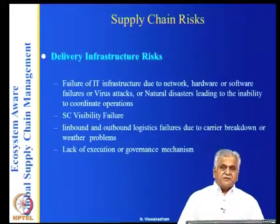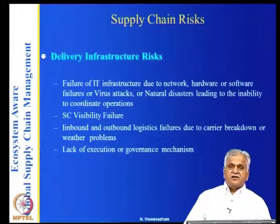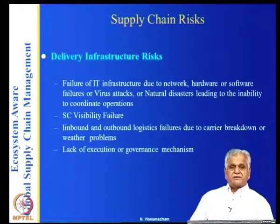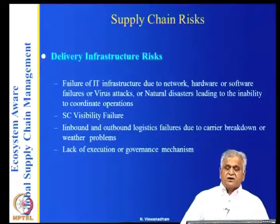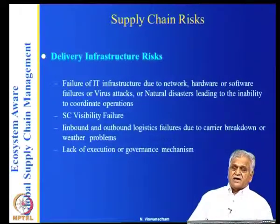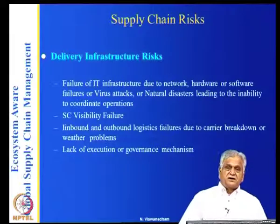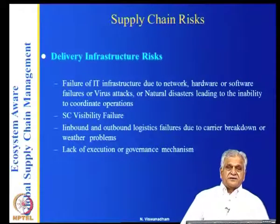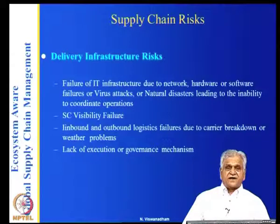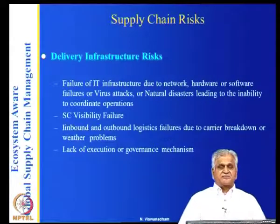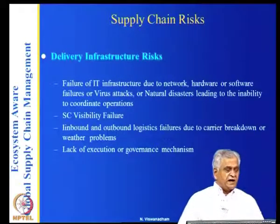Most companies do not have an execution or governance mechanism — ERP and other packages give supply chain plans for manufacturing, delivery, and routing, but if something goes wrong and the plan cannot be executed as given, who will direct people on what to do? That is the execution problem — for example, Penske collaborates with Genpact to solve this. In all four elements of the supply chain ecosystem, risks and failures of various kinds can happen.